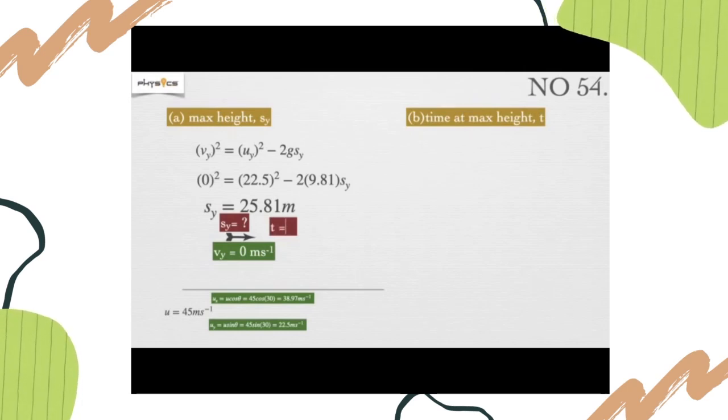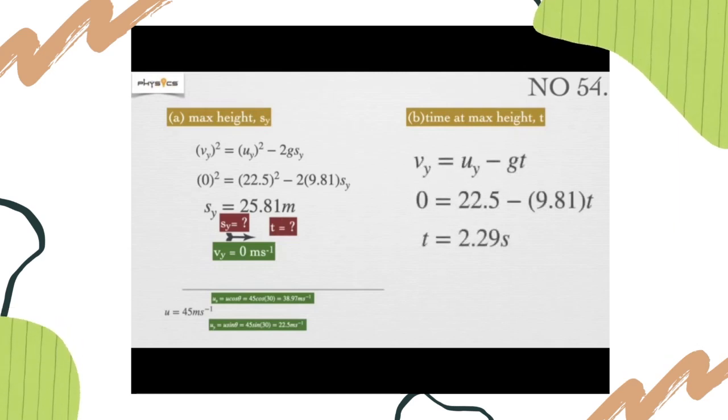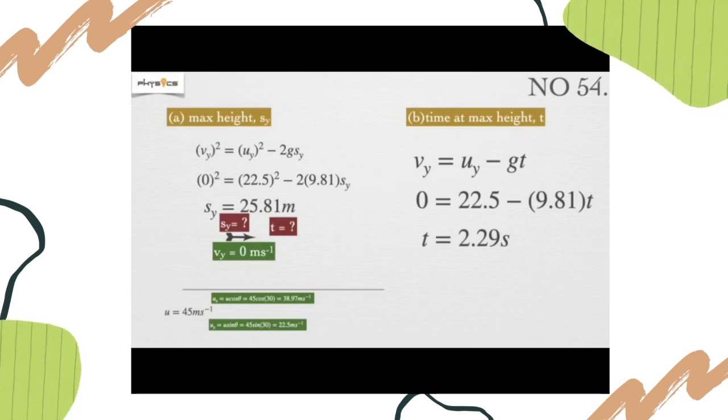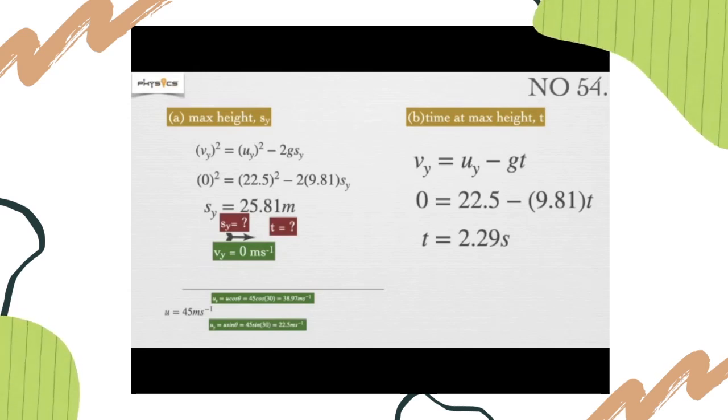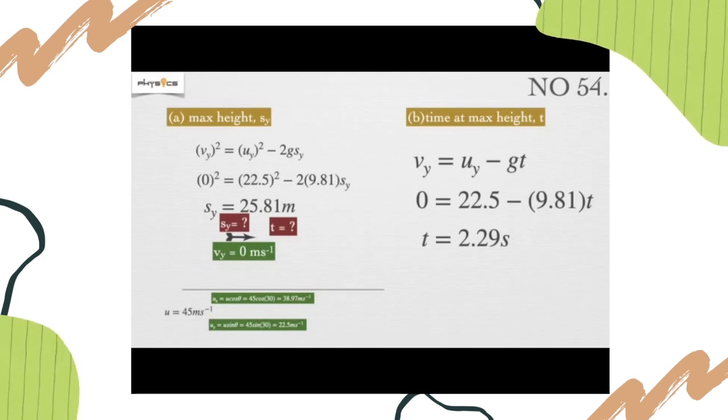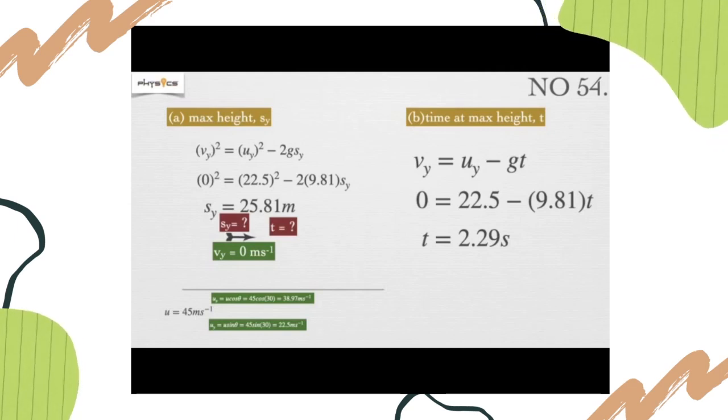Question B: time at maximum height T. There are two formulas to find T. We can use V equals U minus at and also S equals UT minus half at squared. I'm going to use V equals U minus at. Substitute V, U, and G. We got our T equals 2.29 seconds.